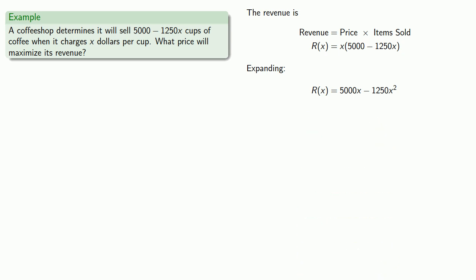We see this is a quadratic function with a negative x squared coefficient, so that means this is a quadratic function which opens downward. And so it will have a maximum value at the vertex.